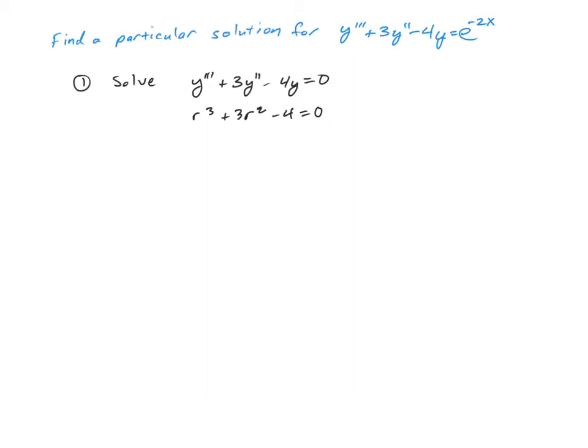If you graph this on a calculator, you will notice that it's going to cross at r is equal to negative 2. So we'll use synthetic division to divide.